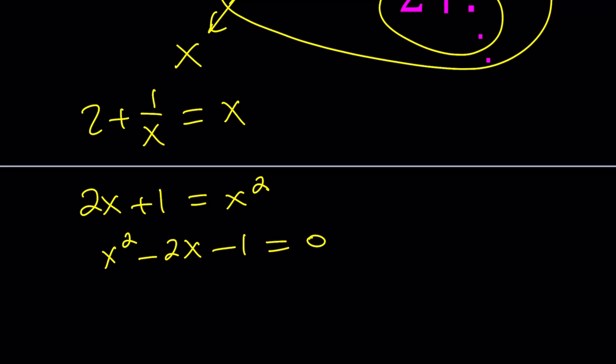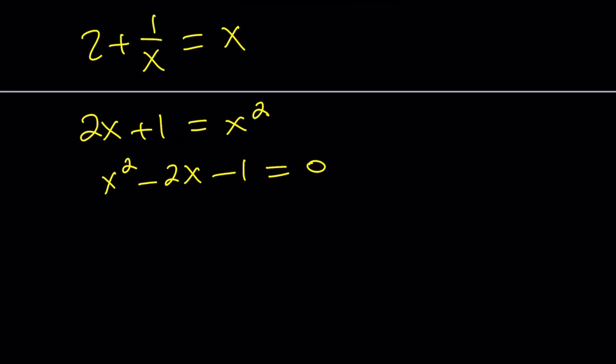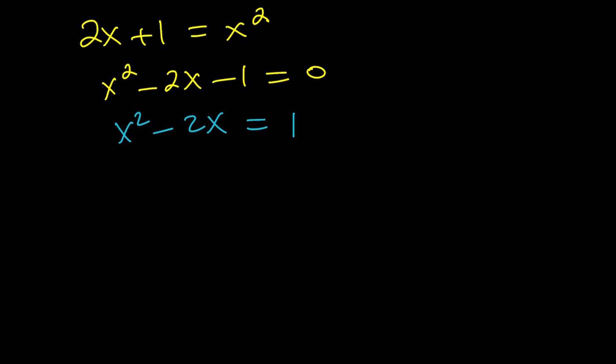You can do completing the square or just use the quadratic formula. Let me show you how completing the square works because that's kind of fun. First you're going to add 1 to both sides. So isolate the constant number. Why are we adding 1? You might be questioning. I need to look at the coefficient of x, and then cut that number in half. And if I square that number, that gives me the number that I should add.